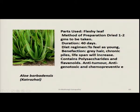Aloe barbadensis — the fleshy leaf of aloe is used as a medicinal extract. It is dried, and 1 to 2 grams of the dried leaf powder is taken for a period of 40 days for rejuvenation. The benefits include prevention of grey hair, cure of chronic piles, and increased life span. Aloe contains polysaccharides and flavonoids and has anti-tumor, antigenotoxic, and chemopreventive properties — a multi-pronged beneficial effect on the human body.